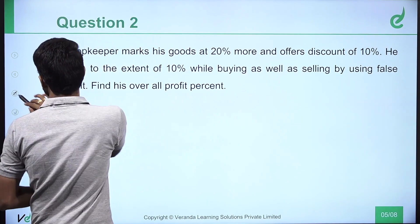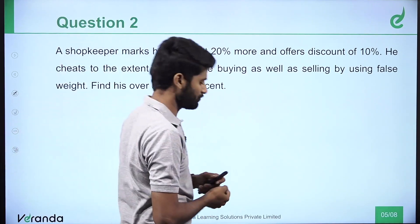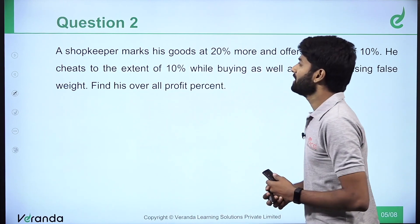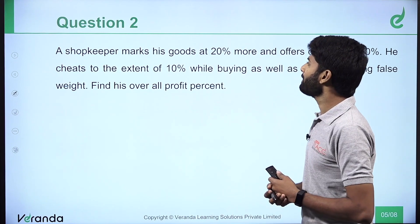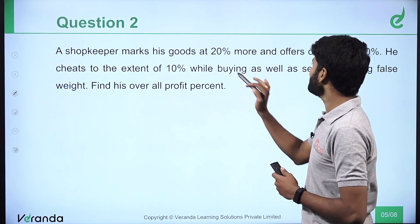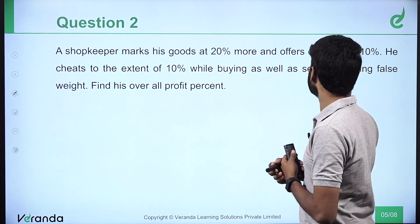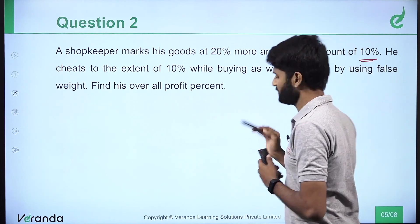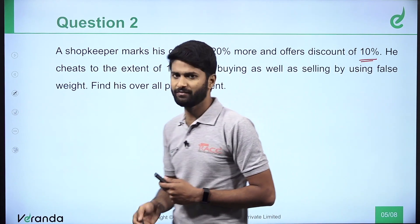Question number 2. First, the theoretical information: a shopkeeper marks his goods 20 percent more and offers a discount of 10 percent — same information as before.